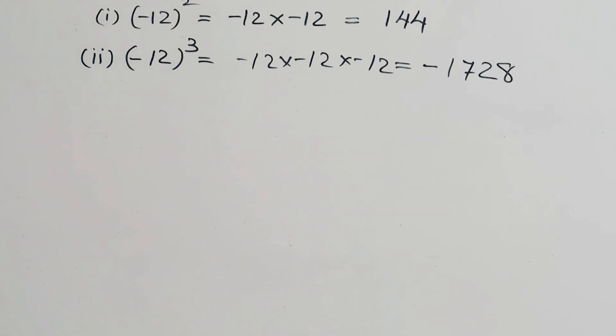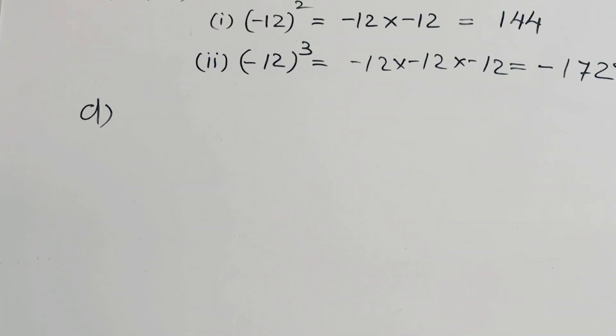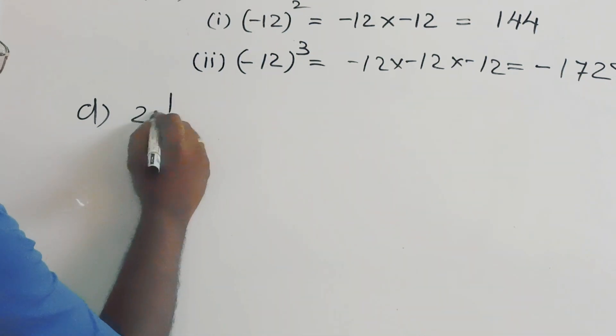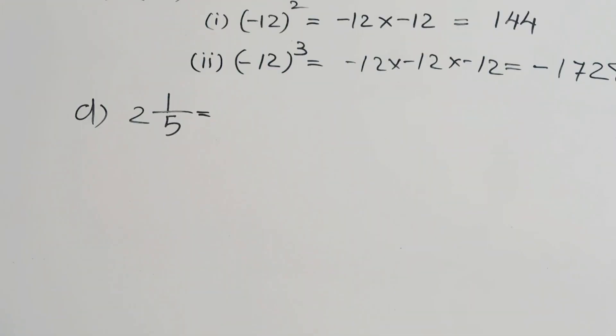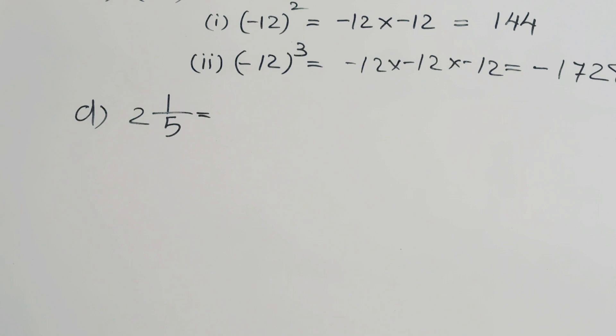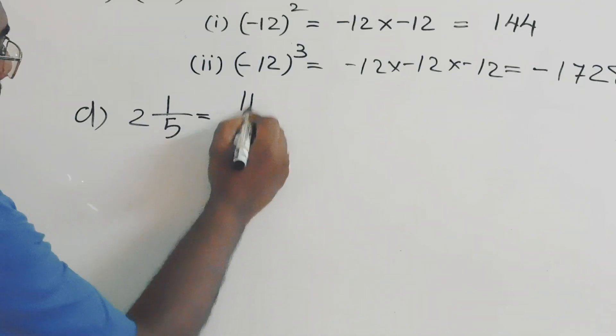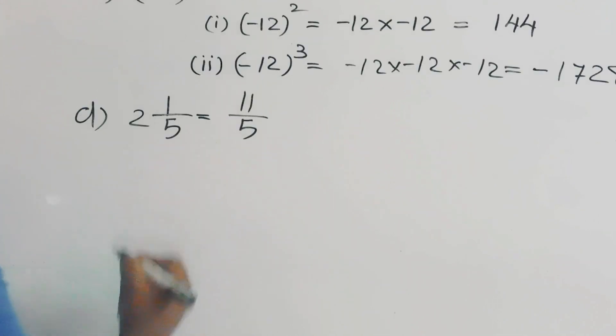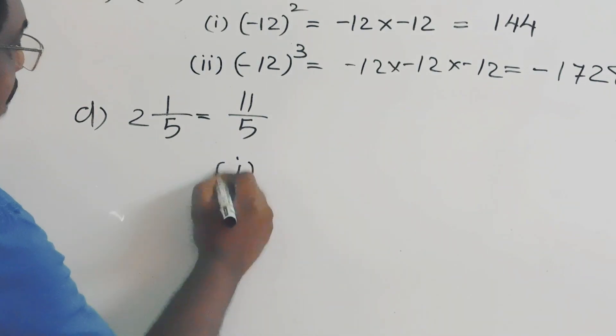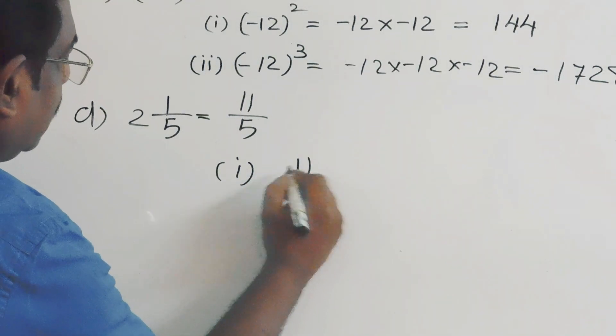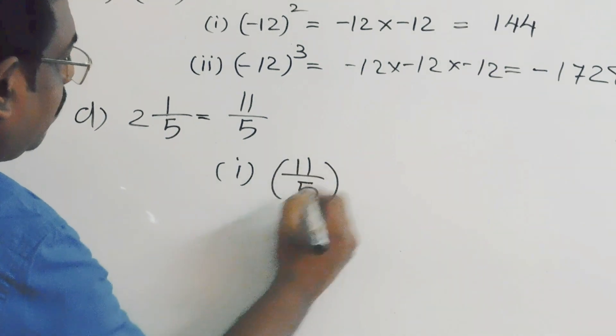Then, we will solve question number D. Here is a mixed number, 2 and 1 by 5. Convert this mixed number into an improper fraction. Two fives plus one is 11 by 5. Now, we have to find out the square of 11 by 5.